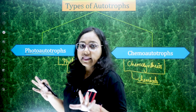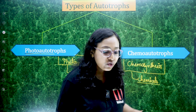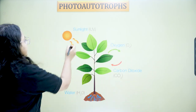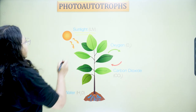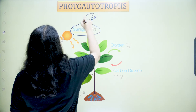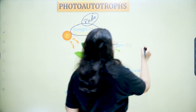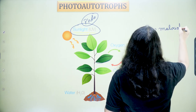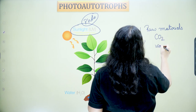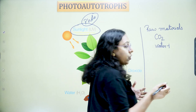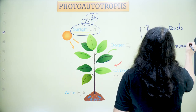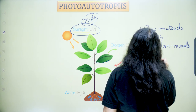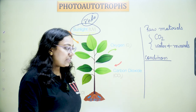Photo autotrophs is photosynthesis, which is very famous. For photosynthesis, we need some raw materials: carbon dioxide, water, and minerals (also called sap). There are also some conditions required without which photosynthesis cannot occur. The first is sunlight — the star of today's lecture — and the second is chlorophyll. These are essential for the process to take place.